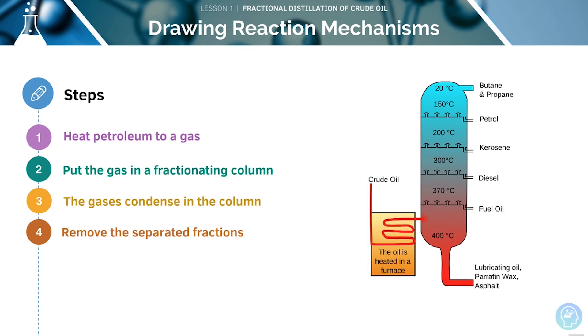Here's a recap of all those steps again. First, we heat up the petroleum, then put the gas into the column. The gases condense as they rise up, and we can remove the separate fractions.